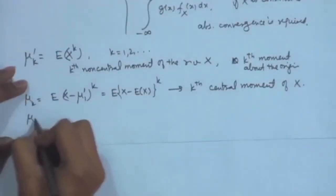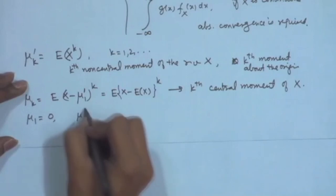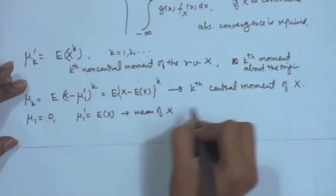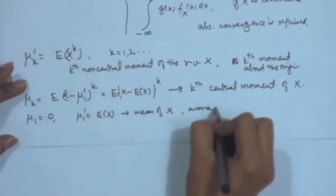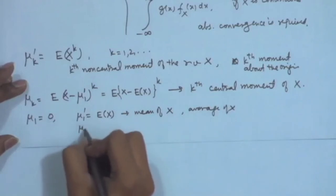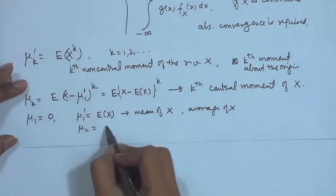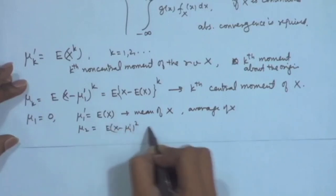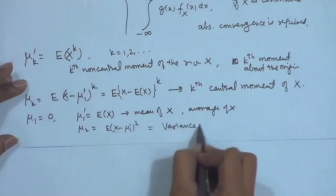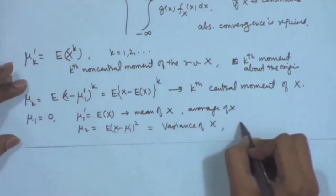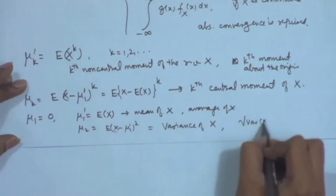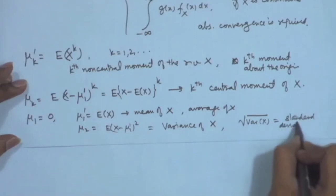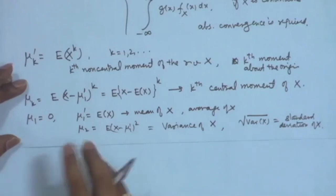We define the k-th non-central moment (moment about the origin) as μ'_k = E[X^k] for k = 1, 2, ... The k-th central moment is μ_k = E[(X − μ'_1)^k], where μ'_1 = E[X]. The first central moment μ₁ = 0; μ'_1 = E[X] is called the mean or average of X. The second central moment μ₂ = E[(X − E[X])²] is called the variance of X, and its square root is the standard deviation.